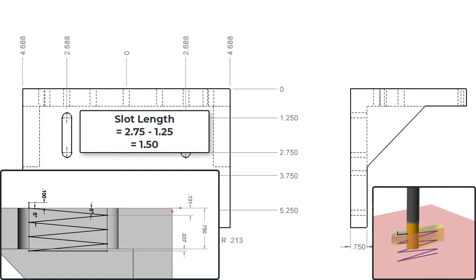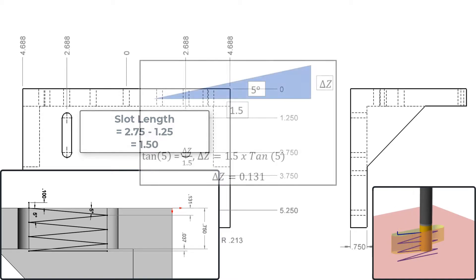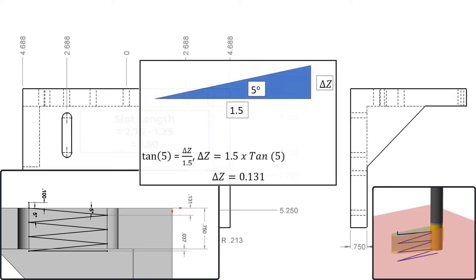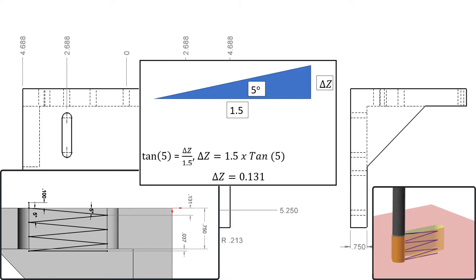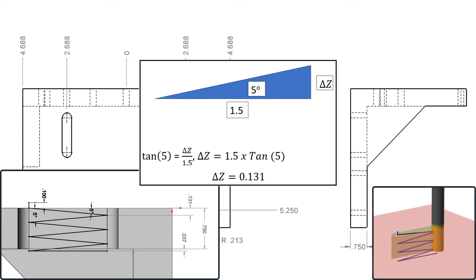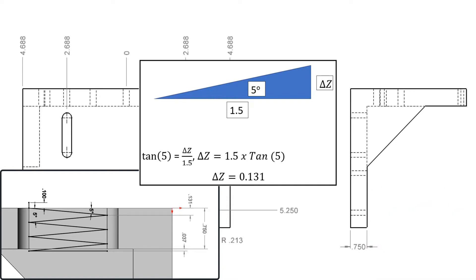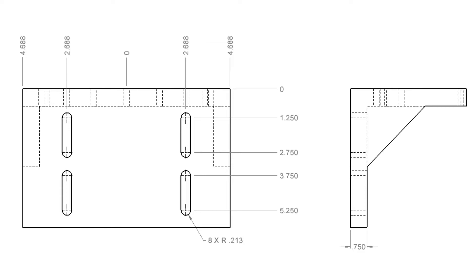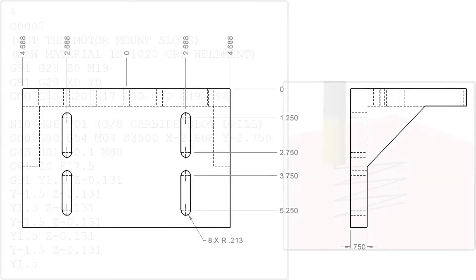The length of the slot from one arc center to the other is 1.5 inches. Therefore, as the cutter travels 1.5 inches in the Y axis, it will travel 0.131 inches in the Z axis when following a 5 degree ramp. Since the part is ¾ inches thick, this ramp will need to be repeated 6 times for the tool to cut through the part. Now that I know all the X, Y, and Z values, I'll create the GNM code to rough this slot.